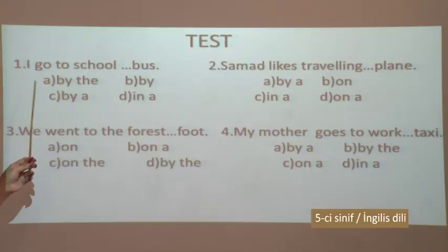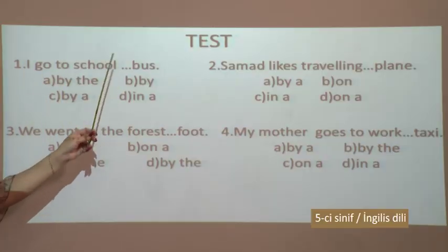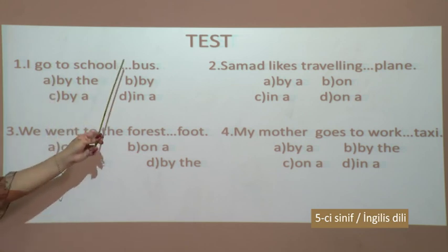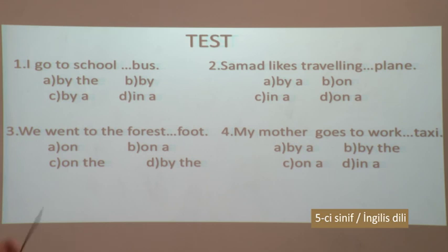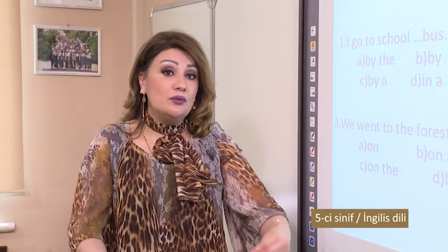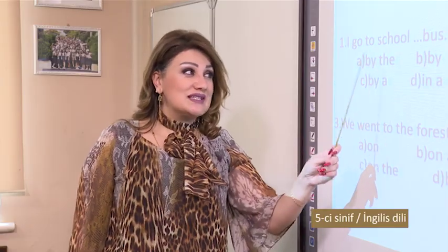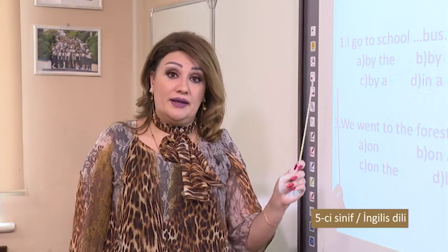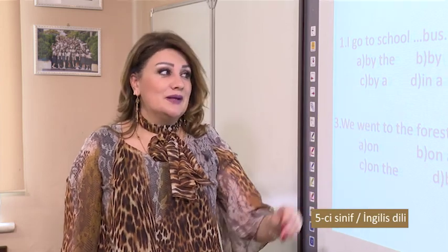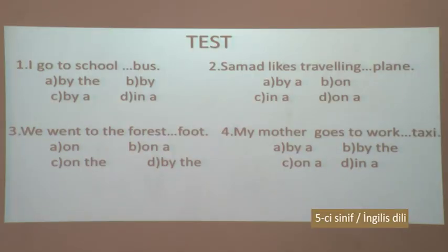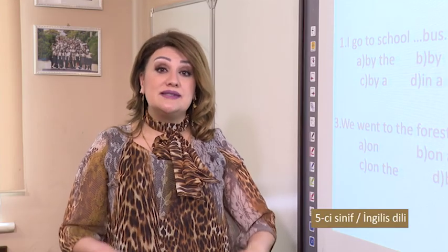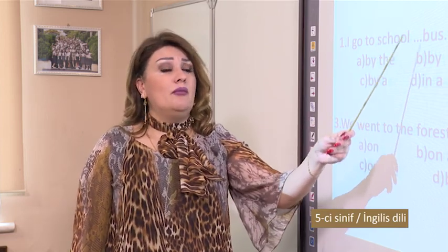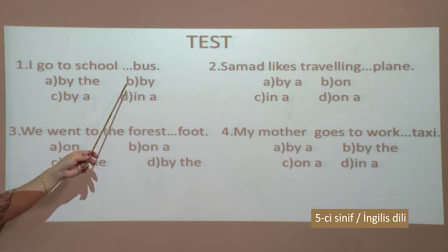I go to school: A - by the bus, B - by bus, C - by a bus, D - in a bus. Which one is correct? Of course, 'by the bus' is incorrect because in this sentence we travel by bus, we go somewhere. Therefore we shouldn't use 'the bus' after 'by'. Also A and C are incorrect - we shouldn't use any article after 'by'. D is incorrect because 'in' is used for transport we can't walk in. The correct variant is B - by bus.